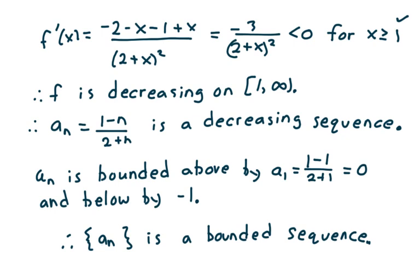Now, a sub n is bounded above by the first term of the sequence, which is a sub 1 equals (1 minus 1) over (2 plus 1), which equals 0. It's bounded below by negative 1 — if we let n get large, a sub n is going to approach negative 1. Therefore the sequence a sub n is a bounded sequence.